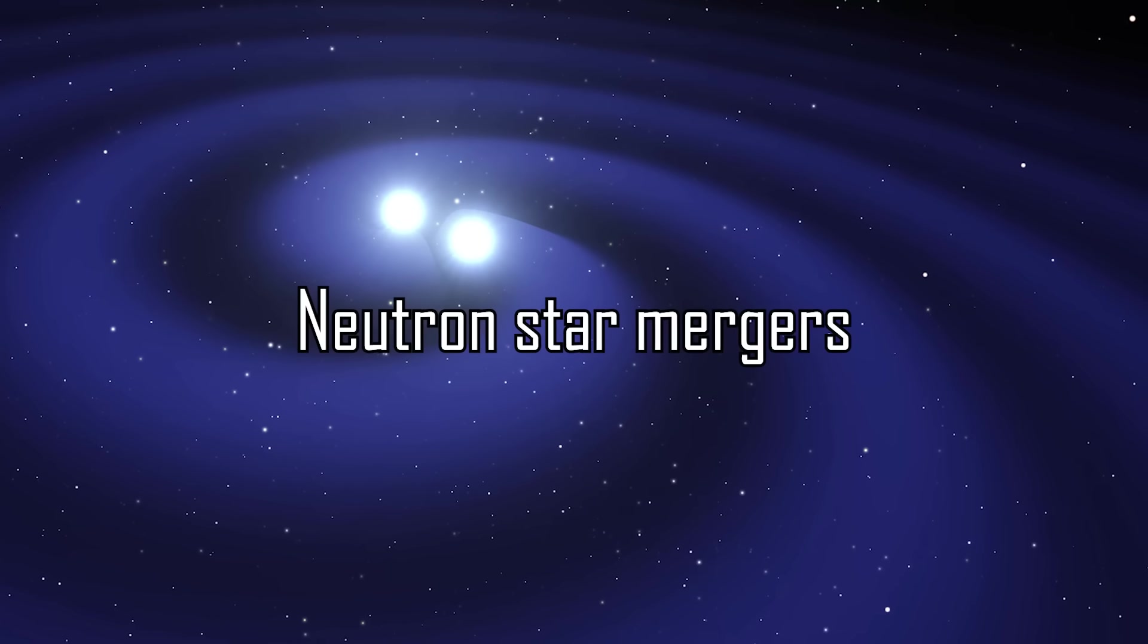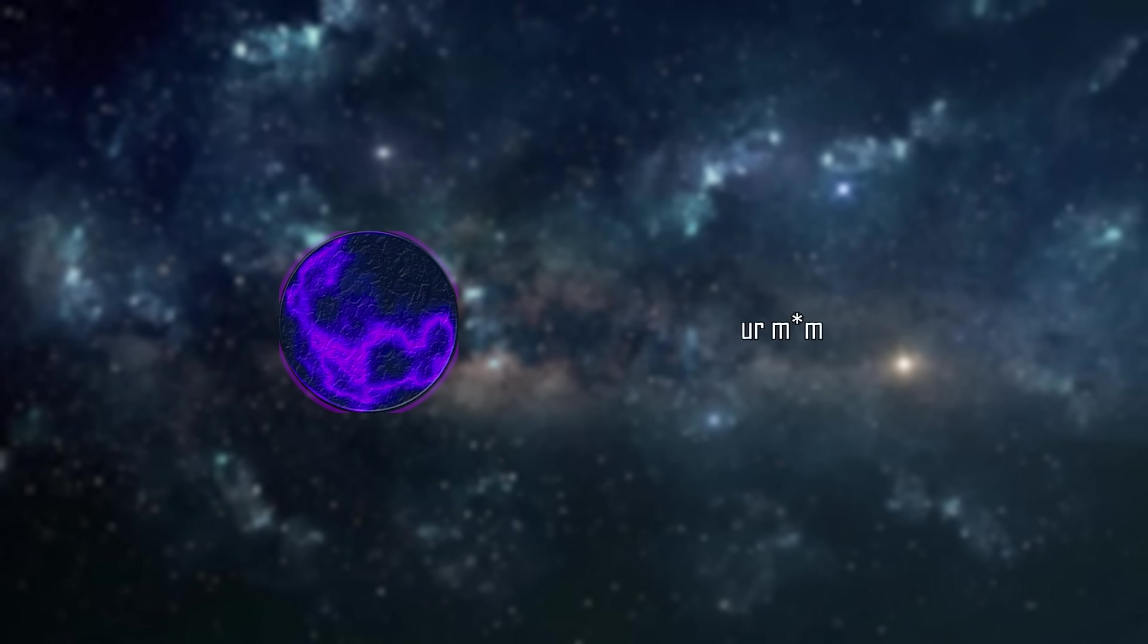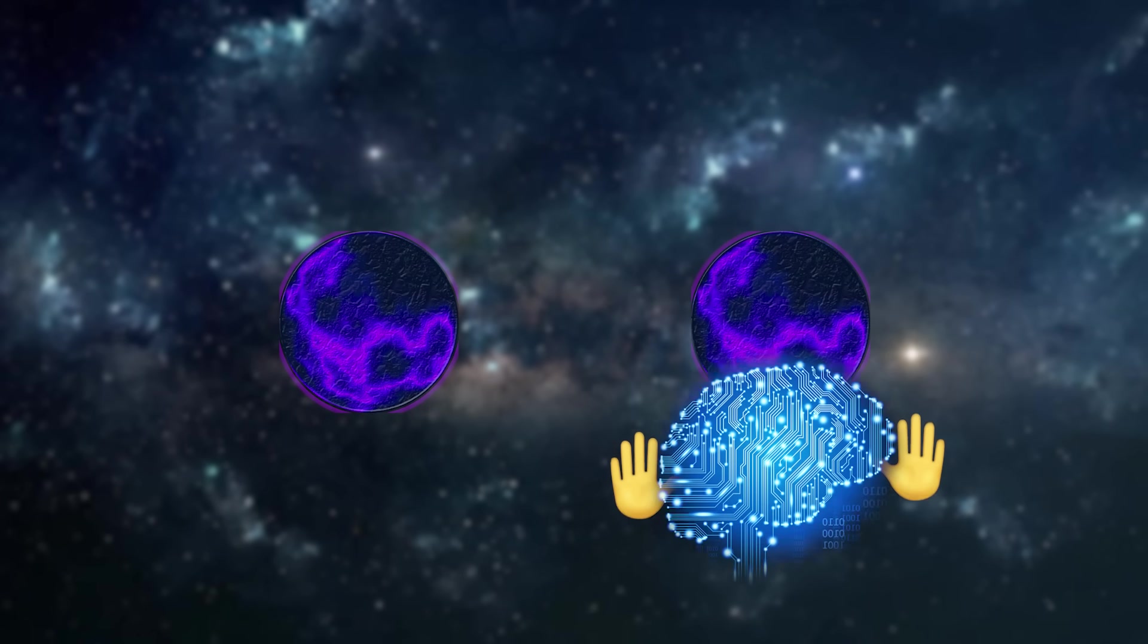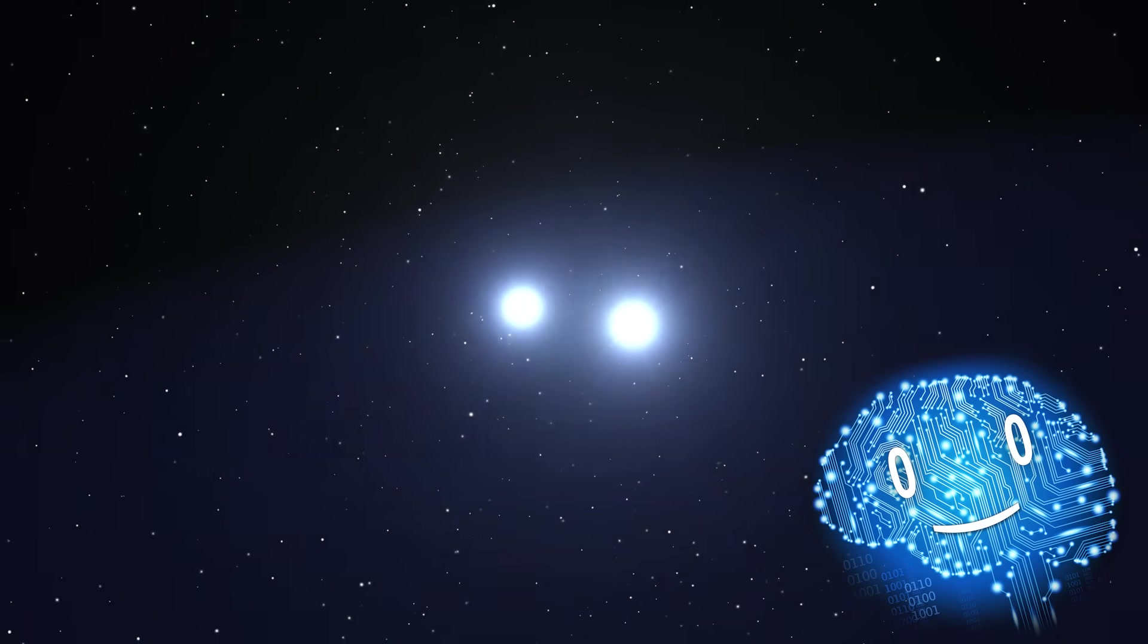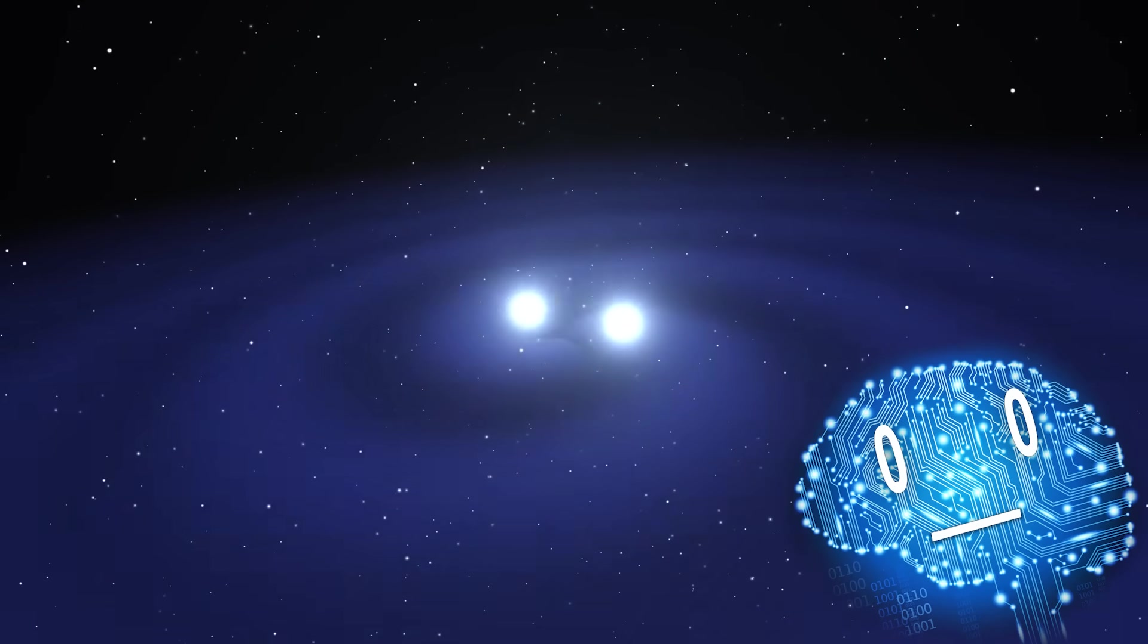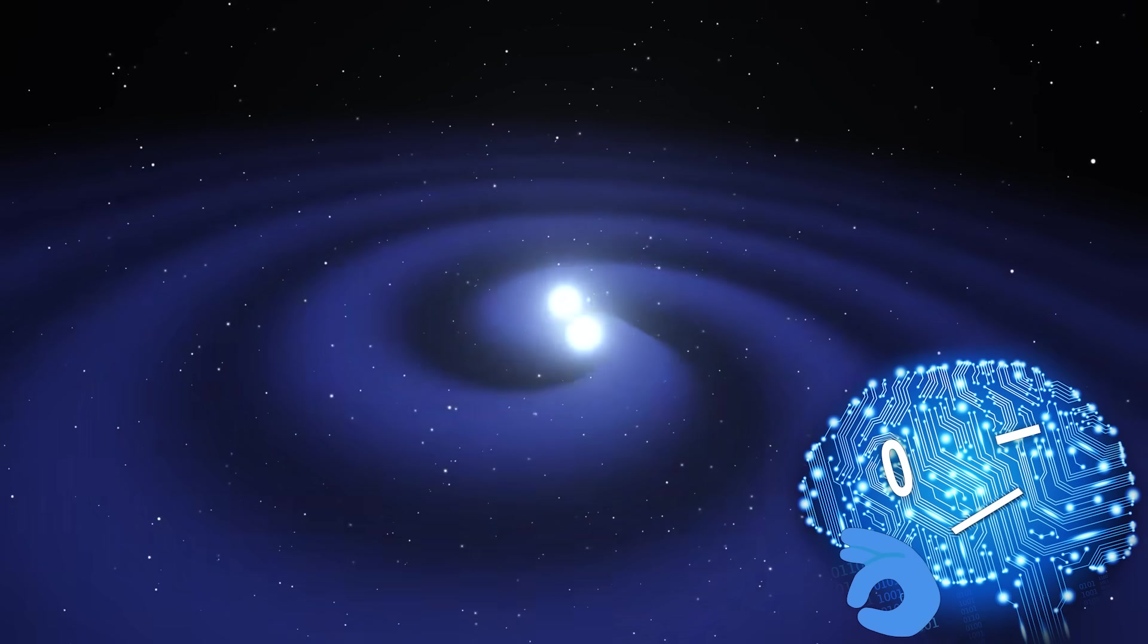Neutron star mergers. Imagine two of the most extreme objects in the universe. And now make them orbit each other. That can last for billions of years, but through the emission of gravitational waves, they lose energy and eventually spiral closer to each other.